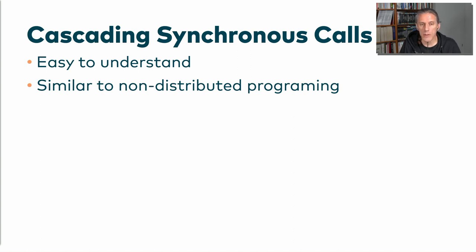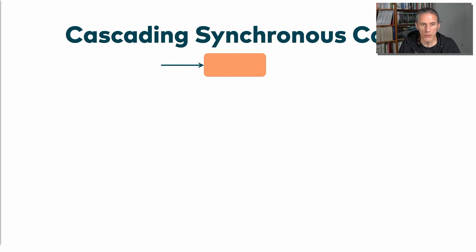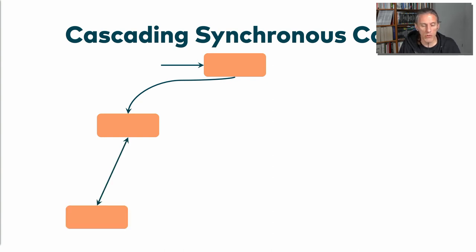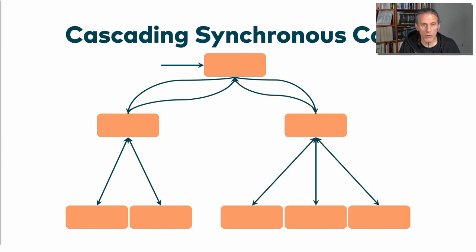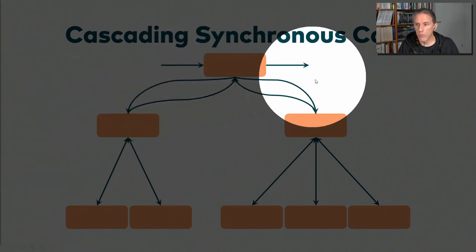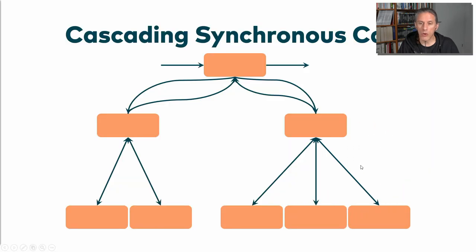What you end up with is a call graph where some call goes to a microservice, that microservice calls another, which calls another, this one returns, then there's another one called, and so on — with one service talking to even three microservices. The problem is there are seven calls across the network. Those are seven chances for the network to fail, and seven times you pay the overhead for the network, serializing and deserializing data, latency in the network, and so on.